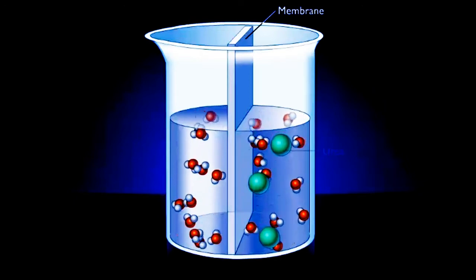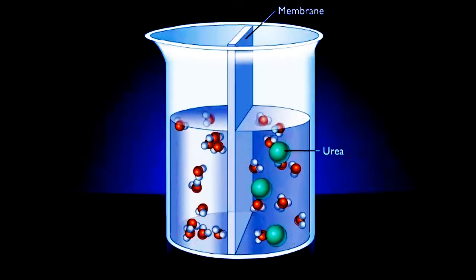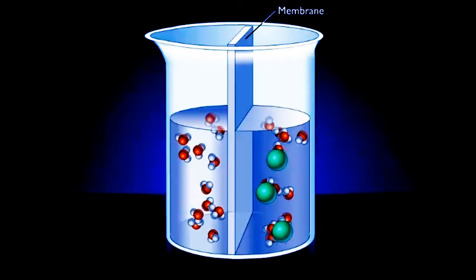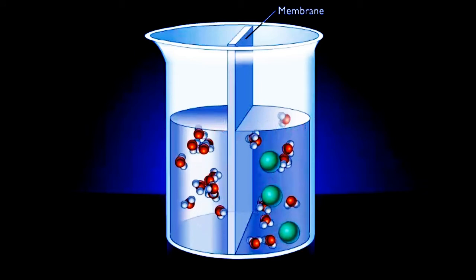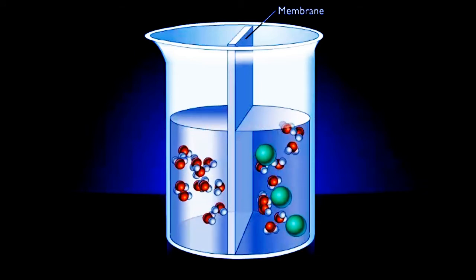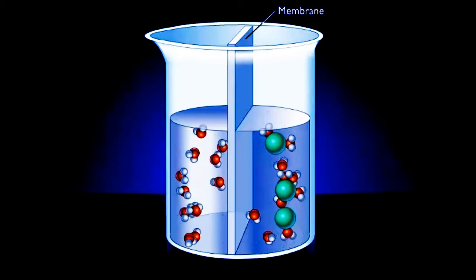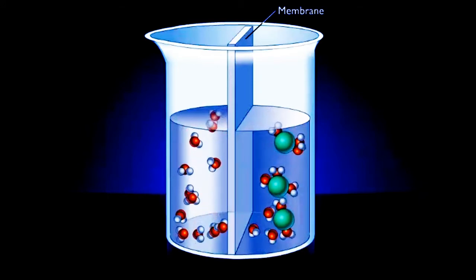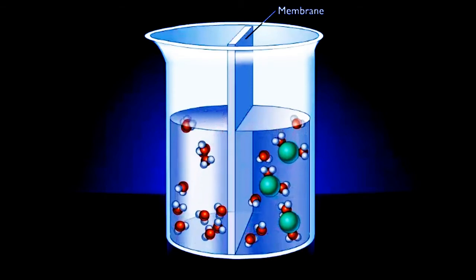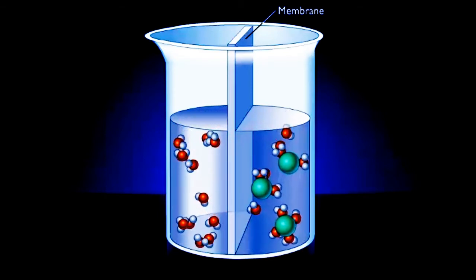If a molecule, such as urea, is added to one side of a membrane, it will not be able to diffuse across the membrane because it is both large and polar. Because of its polar nature, it will interact with other polar molecules, such as water. This interaction reduces the number of free water molecules on the right-hand side.